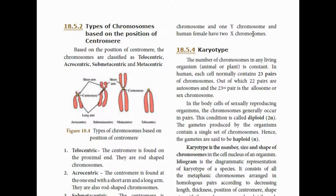In the human body, both male and female have 23 pairs of chromosomes. In the male body, there are 23 pairs: 22 pairs are autosomes, and the 23rd pair is the allosome. The 23rd chromosome in males is one X chromosome and one Y chromosome. In the female body, the 23rd pair is two X chromosomes. This is the difference between male and female chromosome composition.